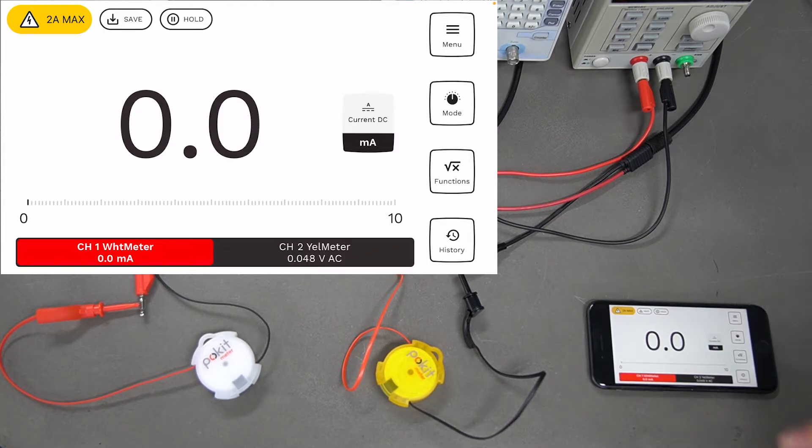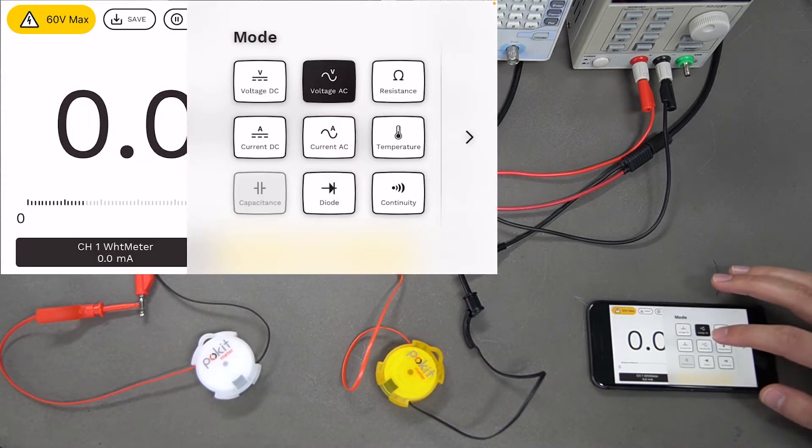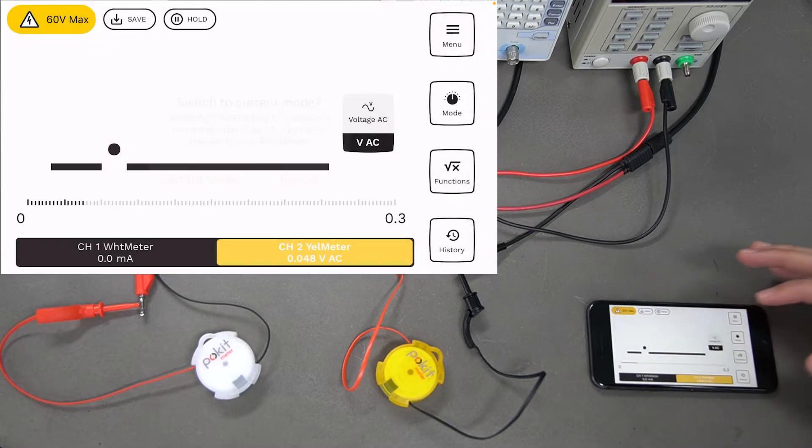For this yellow meter, we'll put it into current AC. You're going to get that same warning again.